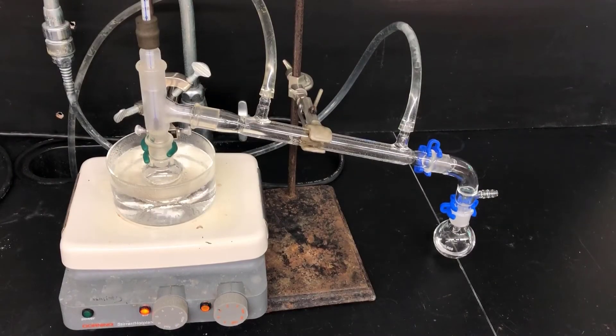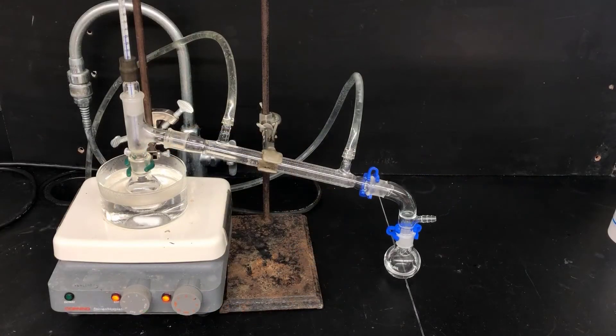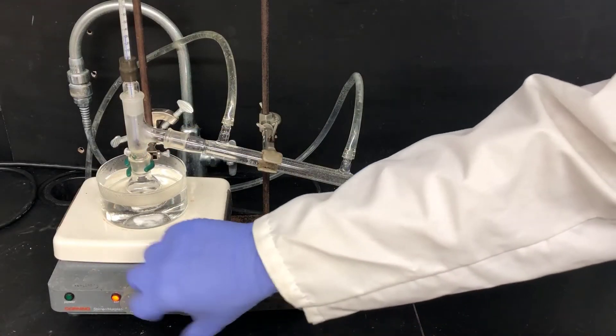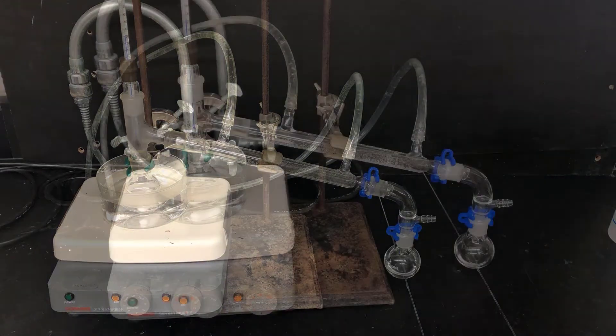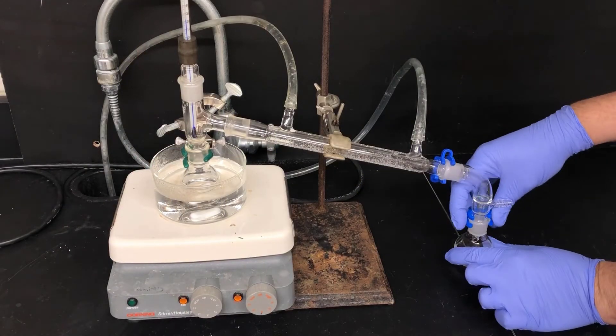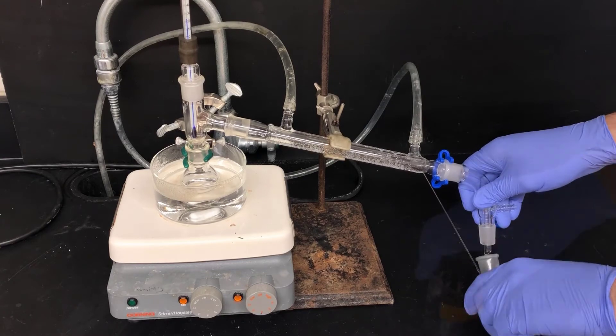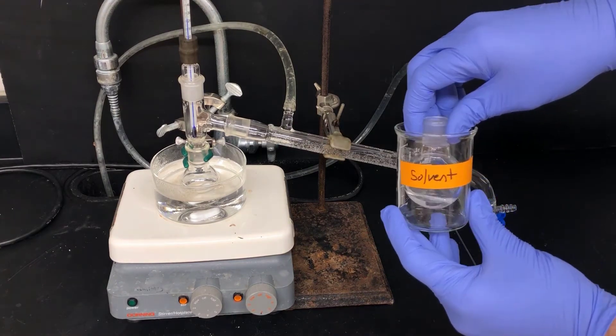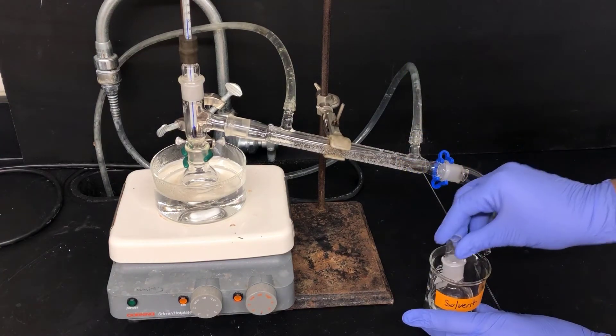And you'll also notice the bubbling in the distillation flask on the left stopping. At this point, the distillation is complete, and you can turn off the heat and the stirring. Now just to make sure there's no confusion, I'm going to take off the collection vessel here and put it in a beaker labeled solvent. And I'll cap this flask, because the solvent is quite volatile.